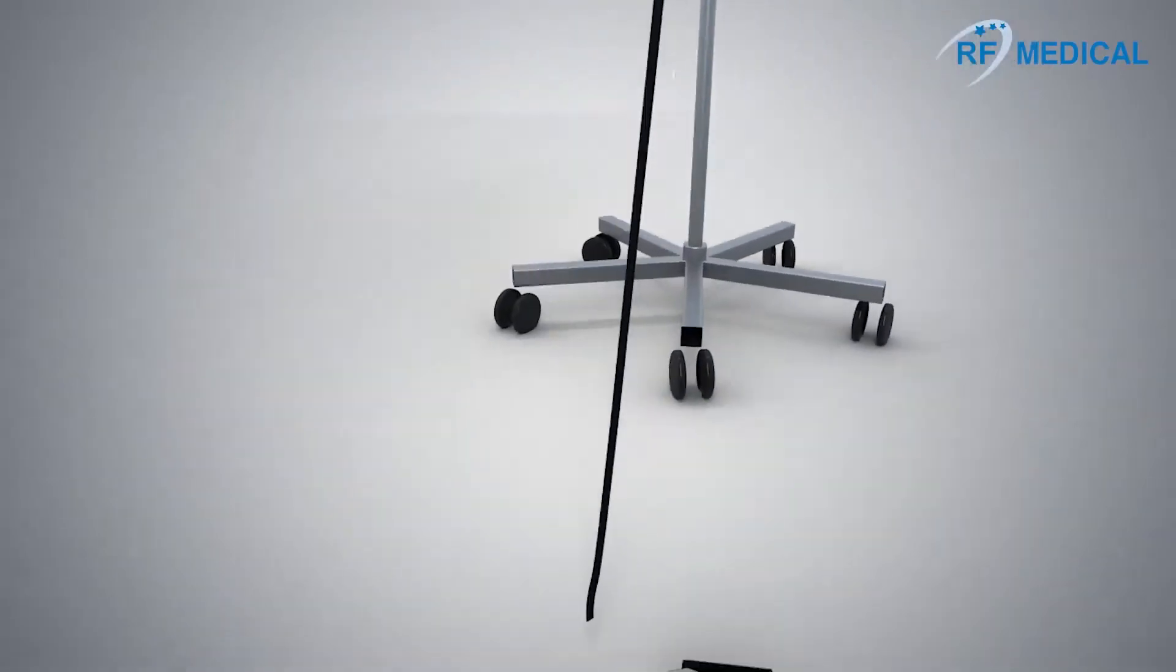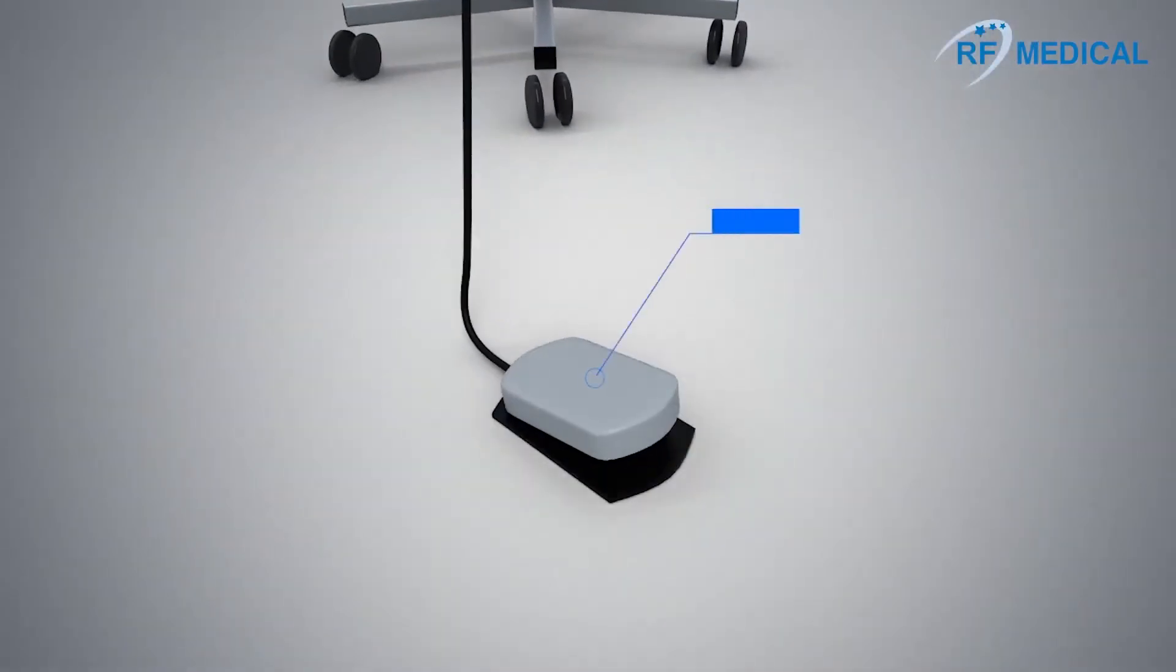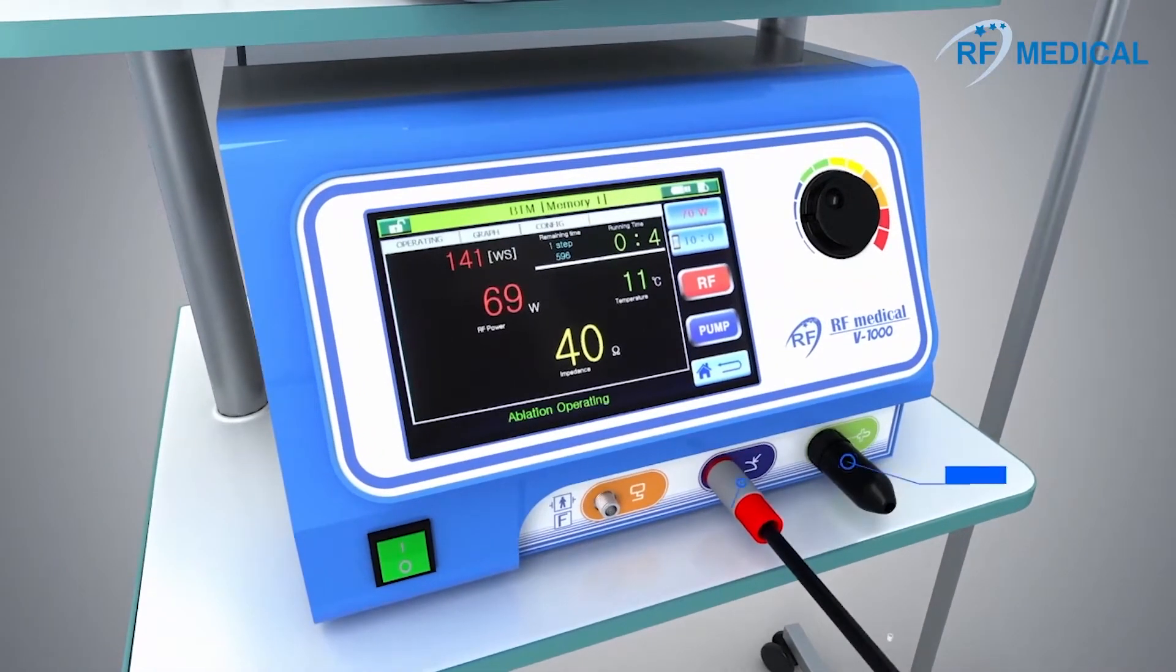The radiofrequency ablation system consists of a generator, foot switch, grounding pads, electrode, and a peristaltic pump.